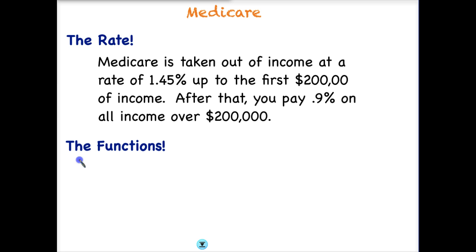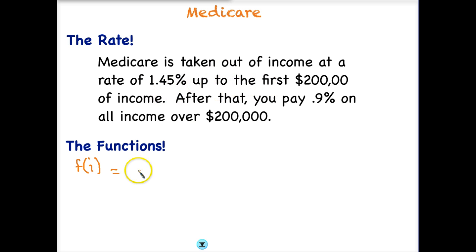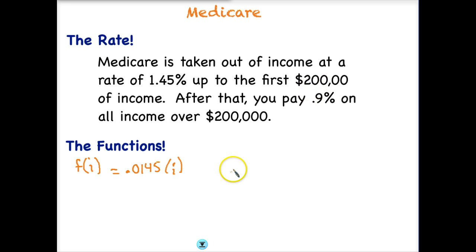So we have our function and we're looking at income again. Our first equation is very similar to Social Security. We have to pay 1.45% on all income, and we're just going to take it in pieces up to the first $200,000. So we write the equation: change to decimal form, that's 0.0145 times income, whatever that income is. Remember this equation only works up to the first $200,000, so we need to write that in the domain: income less than or equal to $200,000. Beyond that, we need a different equation.